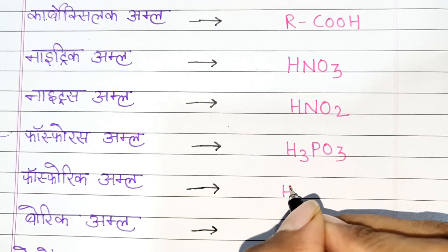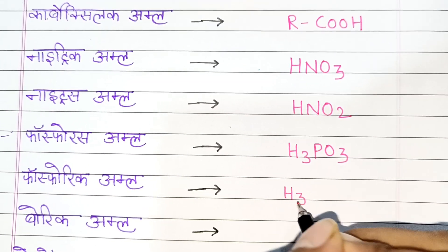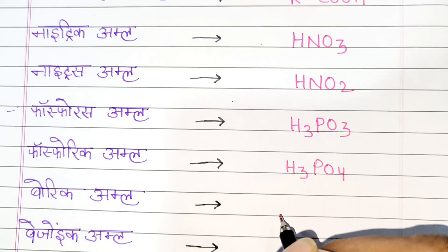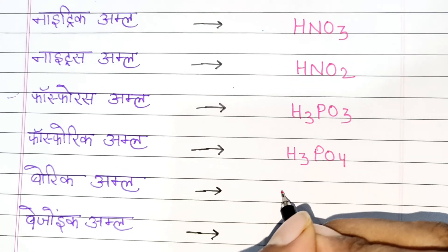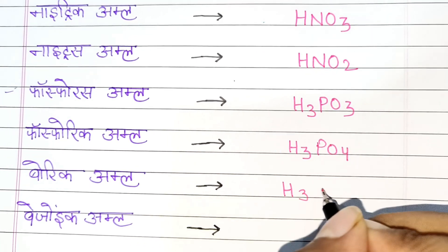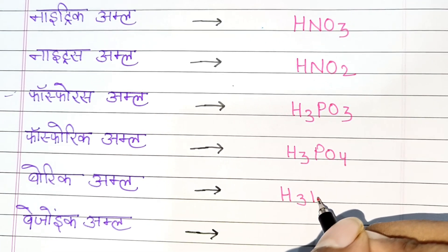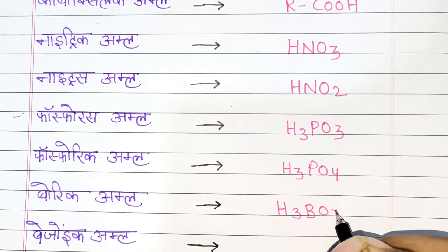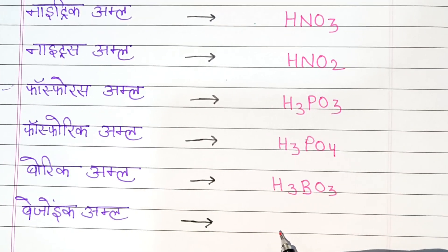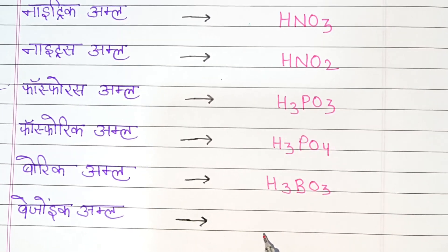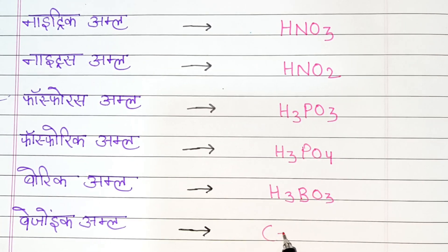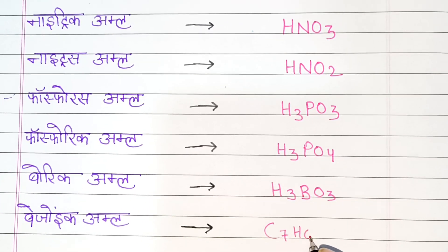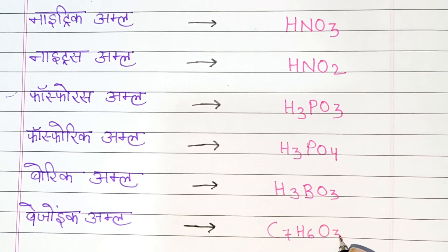8. Phosphoric Acid: H3PO4. 9. Phosphoric Acid: H3PO4. 6. Benzoic Acid: C7H6O2.